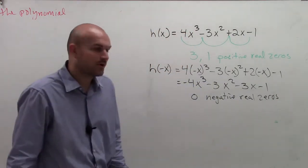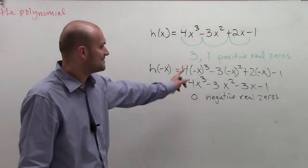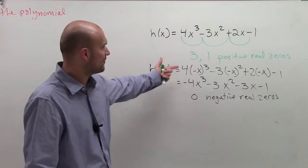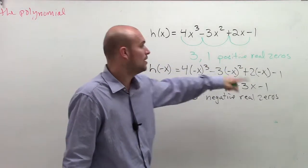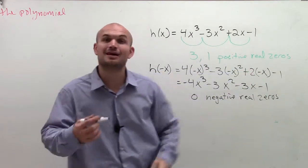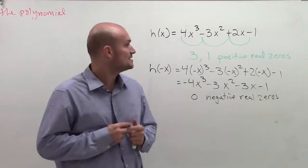So what does that tell us? Well, that tells us I have zero negative real zeros. So therefore, I either have all positive real zeros, three of them, or I have one real zero, and the other two are going to be imaginary.